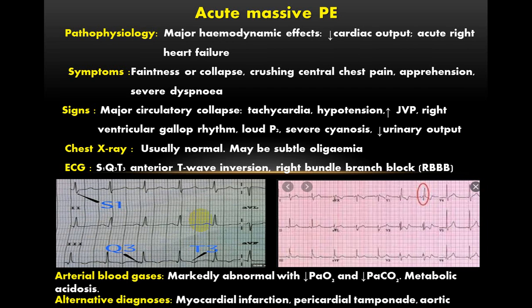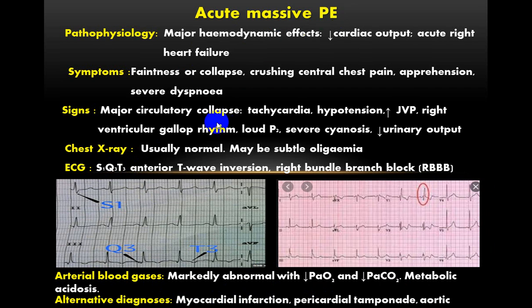Blood gas analysis shows markedly reduced partial pressure of oxygen (PaO2) and decreased CO2 (PaCO2). Patients may present with metabolic acidosis in severe cases of massive pulmonary embolization. Differential diagnoses to keep in mind include myocardial infarction, pericardial tamponade, and aortic dissection — all of which can mimic acute massive pulmonary embolism in presentation.